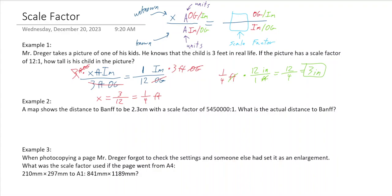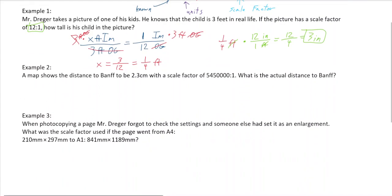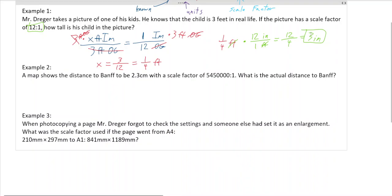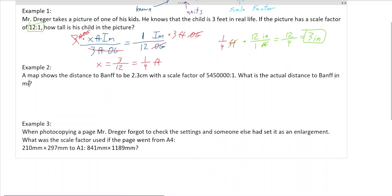You might notice the scale factor of 12 was also the unit conversion factor, so you could have gotten there almost instantly. Anyway, let's try another question. A map shows the distance to Banff to be 2.3 centimeters with a certain scale factor. What is the actual distance to Banff in miles?